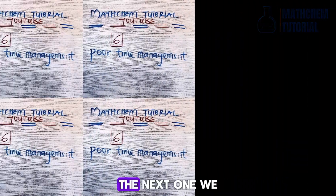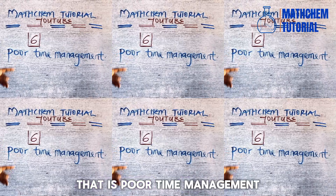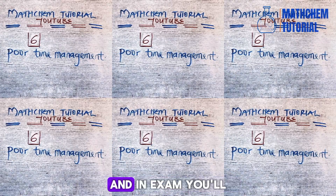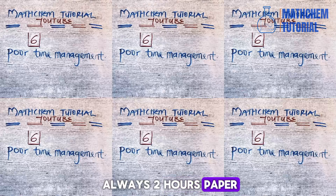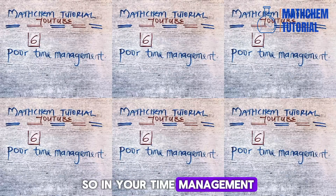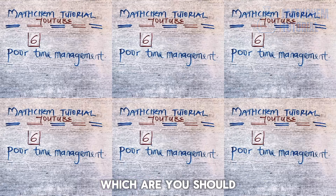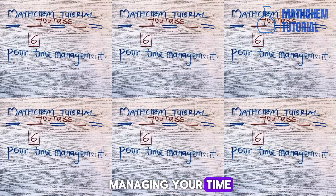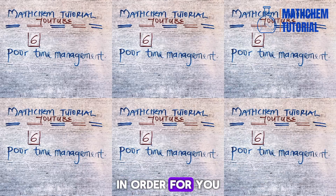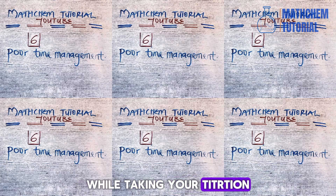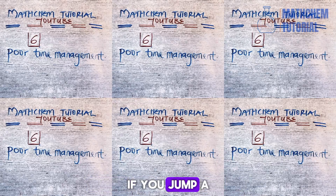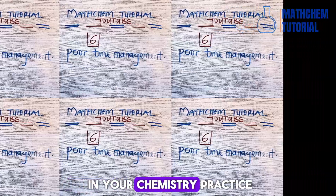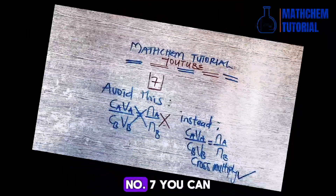Number six is poor time management. Many students do not know how to manage their time. In the exam, you are given a stipulated time — chemistry practical is usually a two-hour paper. In managing your time, you should not omit important steps just to save time. Schedule your time well while doing your titration and salt analysis, but do not omit important steps, because those steps might earn you good marks, and skipping them means you are losing marks.